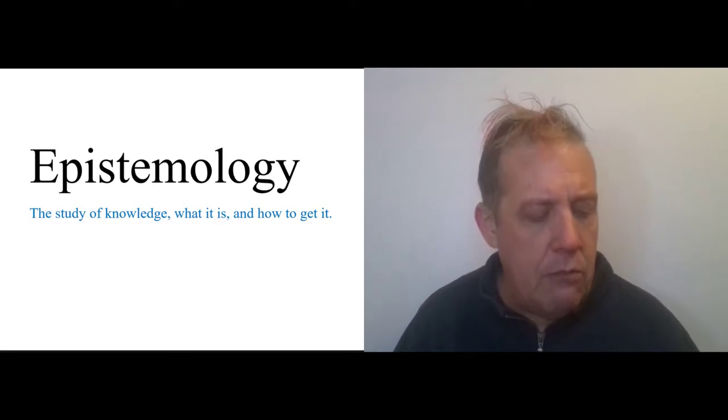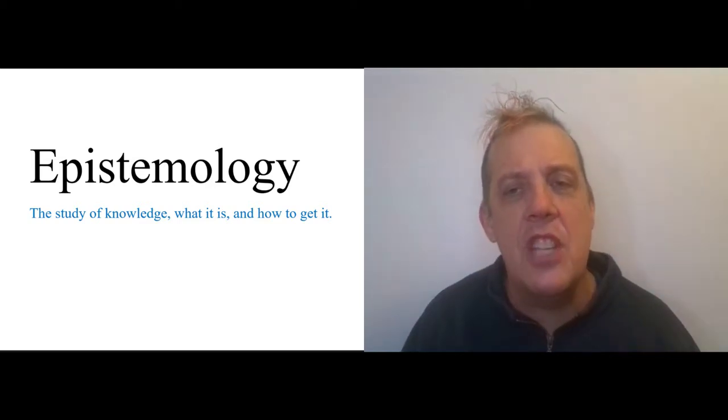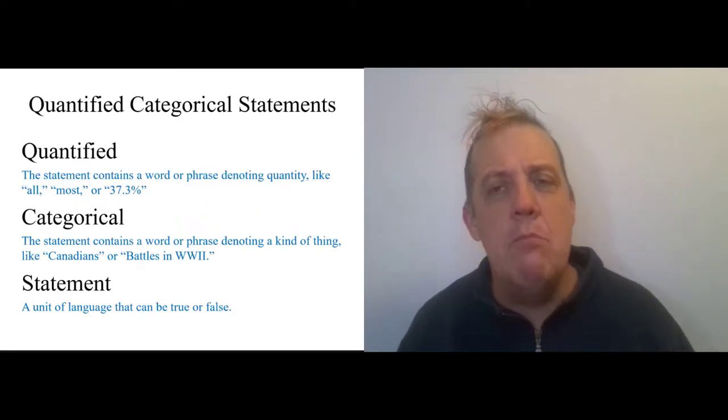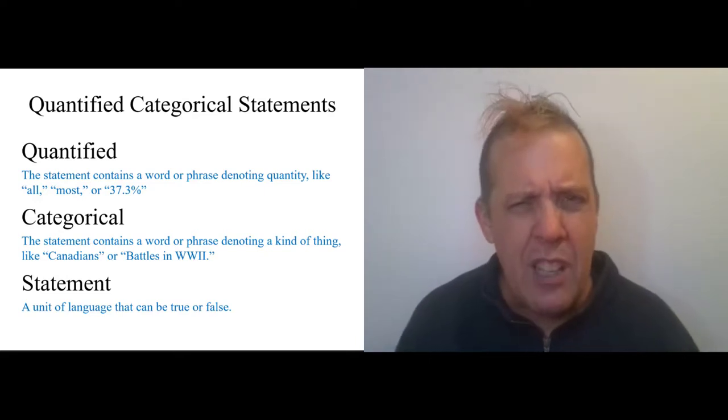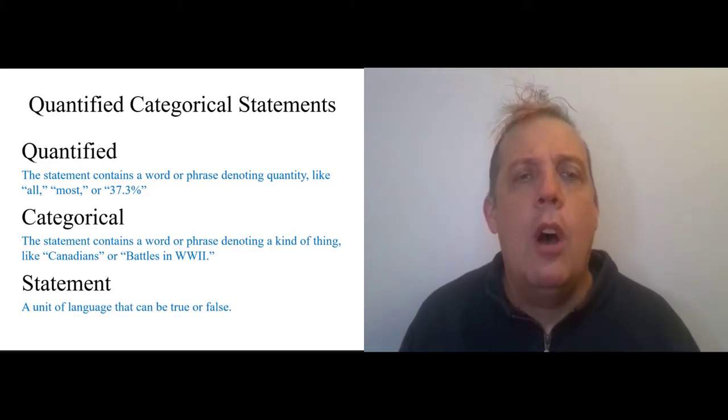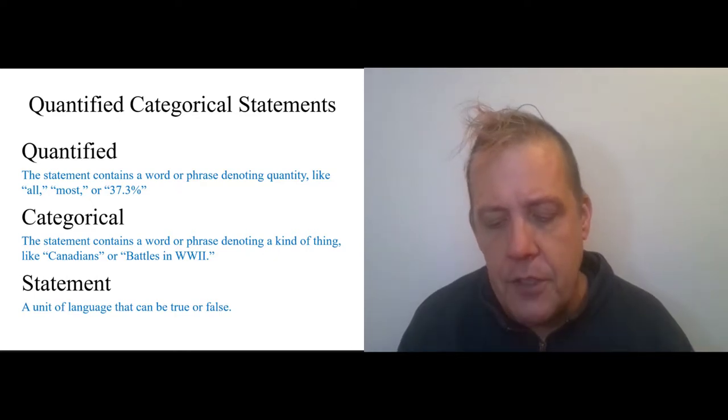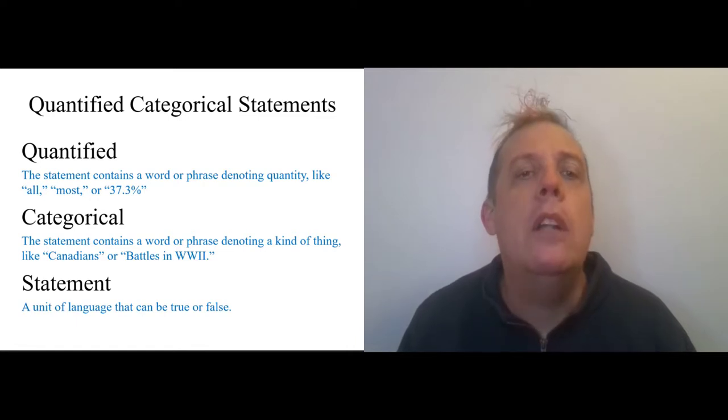I'm going to be focusing right away on a particular kind of claim that he makes that comes up frequently. Normally we just think of these as statistical claims or numbers, but I want to break them down a bit more. The kinds of statements that Desmond is making that we're going to be concerned with now are what we call quantified categorical statements. This is something that logicians and philosophers have been studying forever.